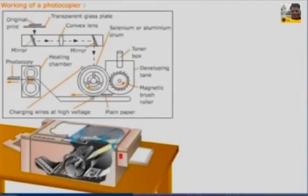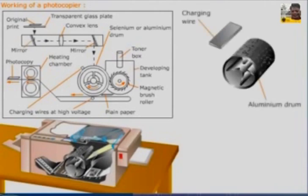Let us see what happens when a printed matter is placed on the copier. The charging wire which is at a high voltage emits positive ions. The atoms of selenium present on the aluminum drum emit electrons to neutralize the positive ions. Thus the drum acquires positive charge.